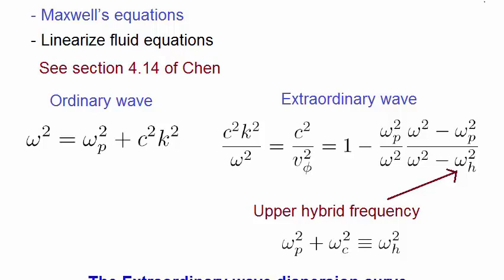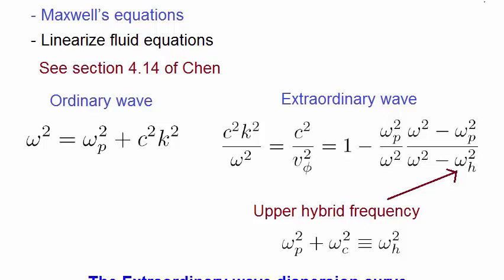Let's plot the dispersion curve of the extraordinary wave, and look at some of its features. Note that the label on the y-axis, which is the phase velocity vph squared on the speed of light squared, is nothing more than the inverse of the refractive index squared. Remember that refractive index is the speed of light, c, divided by the phase velocity, vph.